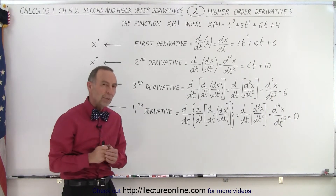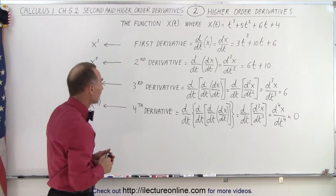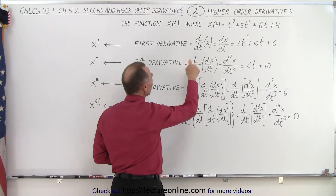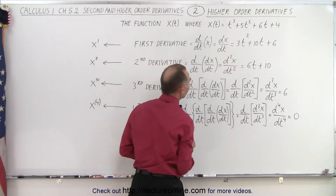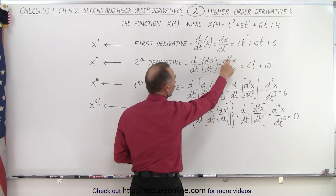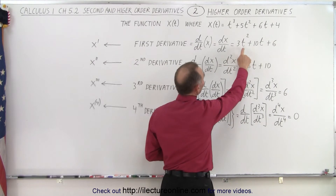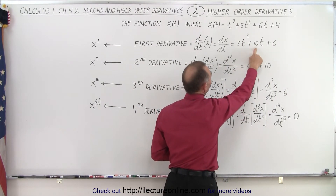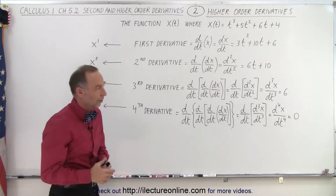What happens when we take the second derivative, which means the derivative of the derivative? The second derivative is d/dt of dx/dt, and we write that as d²x/dt². Taking the derivative of 3t squared plus 10t plus 6, we get 6t plus 10. The derivative of the constant 6 is 0.